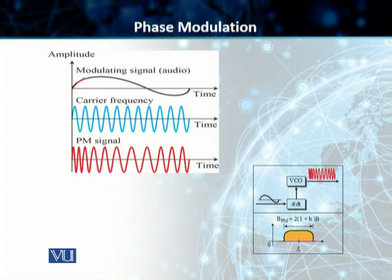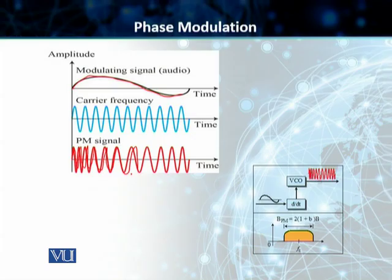So with the change in amplitude, you have got a constant change in the phases of this PM signal. Amplitude remains the same, and frequency remains the same as well.